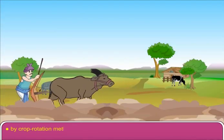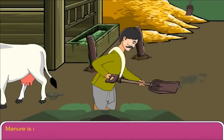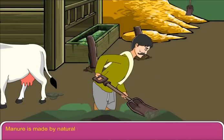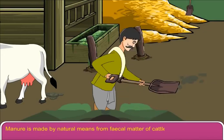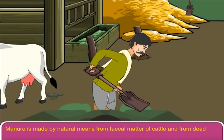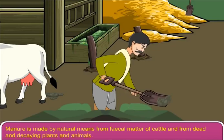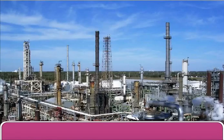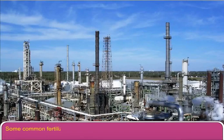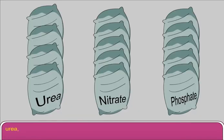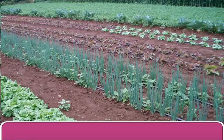Manure is made by natural means from fecal matter of cattle and from dead and decaying plants and animals. Fertilizers are made in industries. Some common fertilizers are urea, nitrate fertilizers, and phosphate fertilizers.